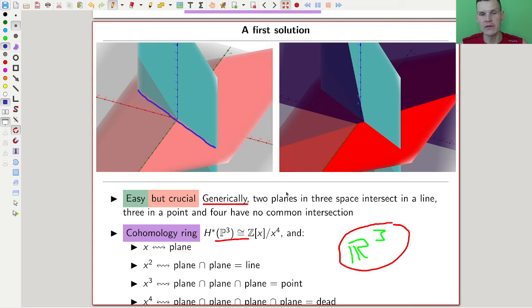Not very difficult, very easy to see. And three planes, generically, will intersect in a point, the point is somewhere here. So generically, that's what happens. And four planes will not have any common intersection anymore.